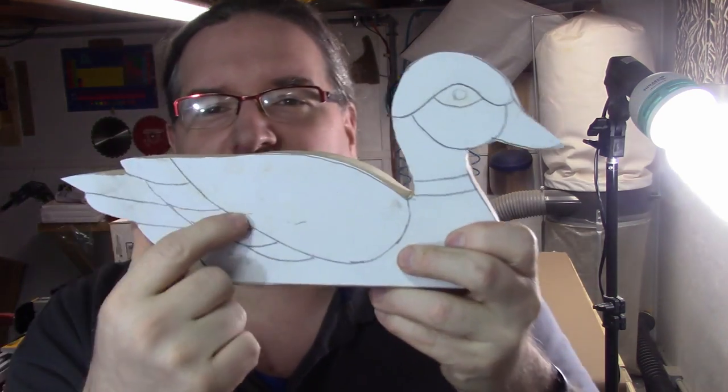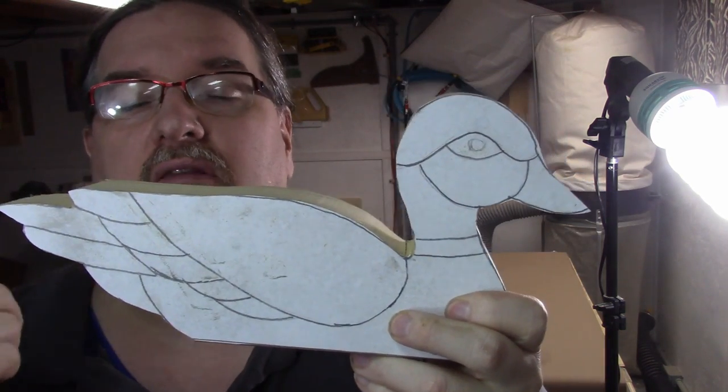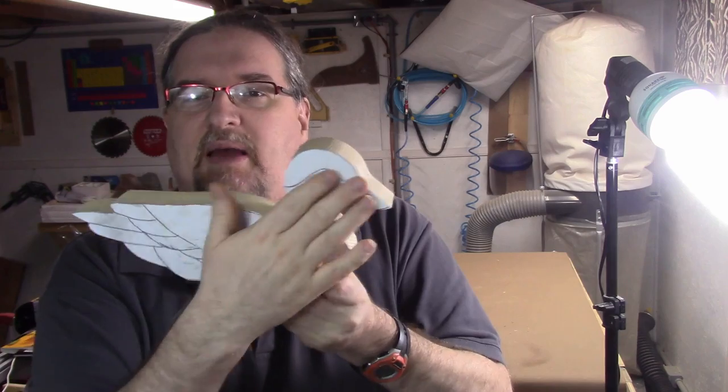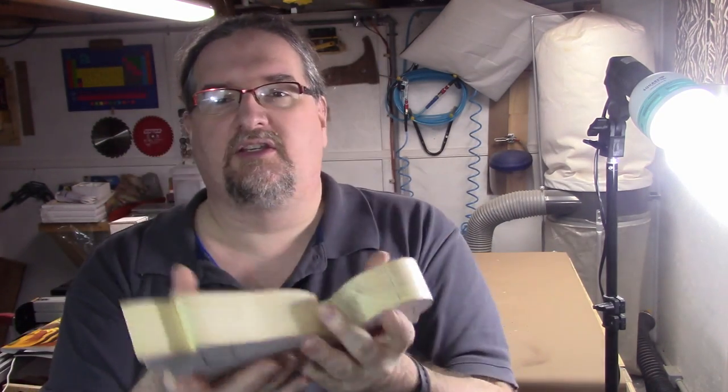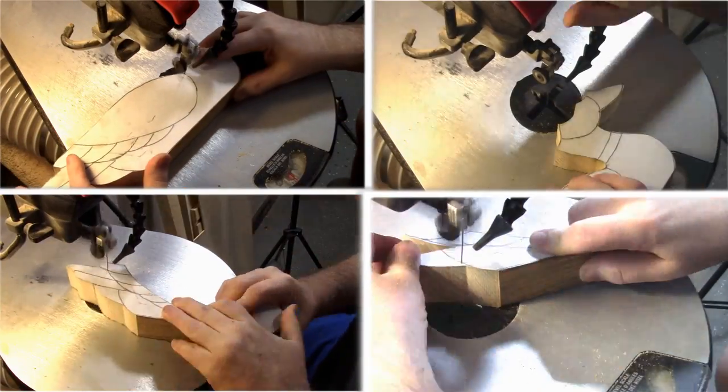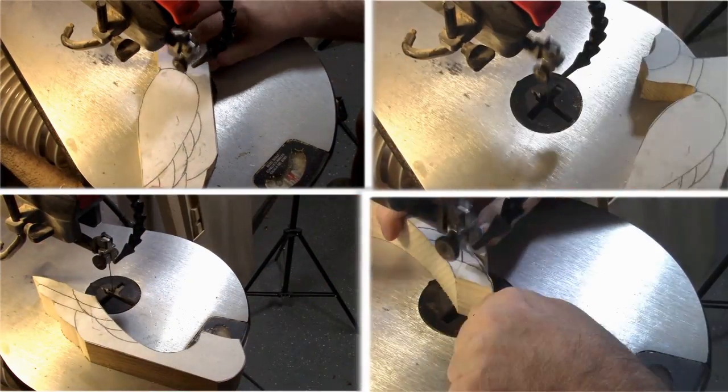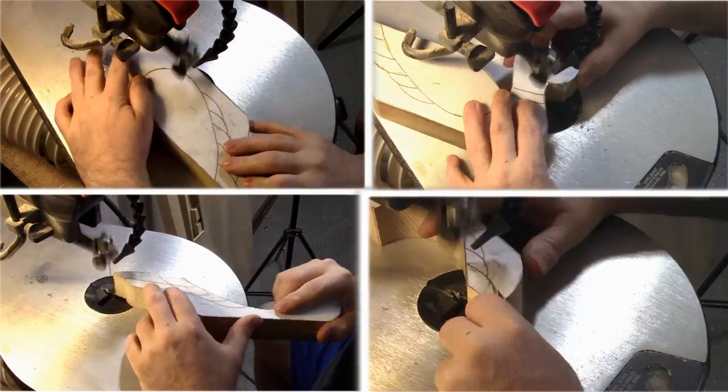Now I'm going to go ahead and cut out each segment using the scroll saw. Once I just separate everything out, I'll round it all over and we'll put it back together and it's coming along pretty cool. And now I'm just treating it like it was a puzzle and I'm separating out each individual piece.